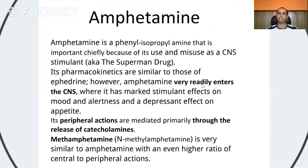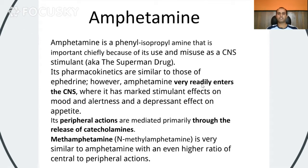Moving on to Amphetamine. Amphetamine is often called the superman drug. It is a phenylisopropylamine that is used as a CNS stimulant, which is why we call it the superman drug. Its pharmacokinetics are very similar to epinephrine; however, Amphetamine enters the CNS more rapidly. It has marked stimulant effects on mood and alertness. Its peripheral actions are mediated primarily through the release of catecholamines. Methamphetamine is very similar to Amphetamine and has a higher ratio of central to peripheral actions.